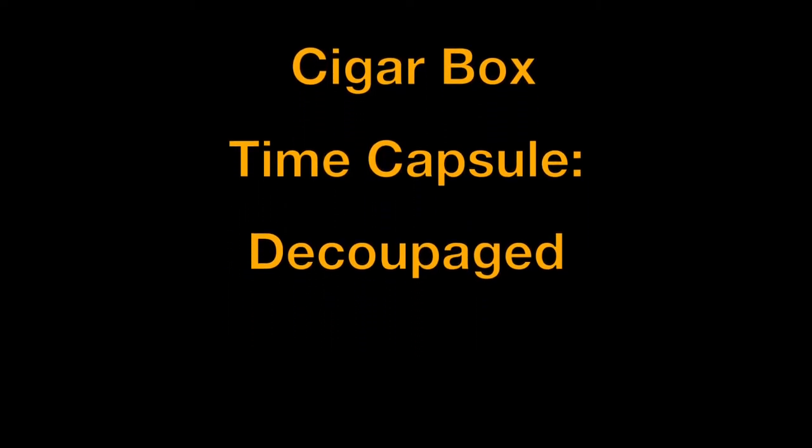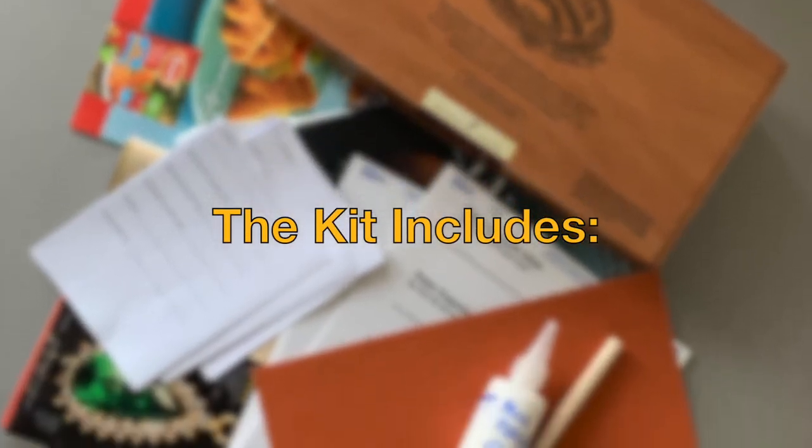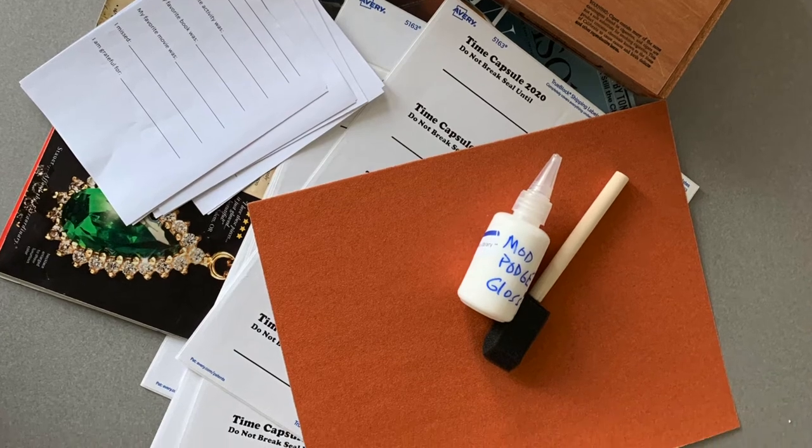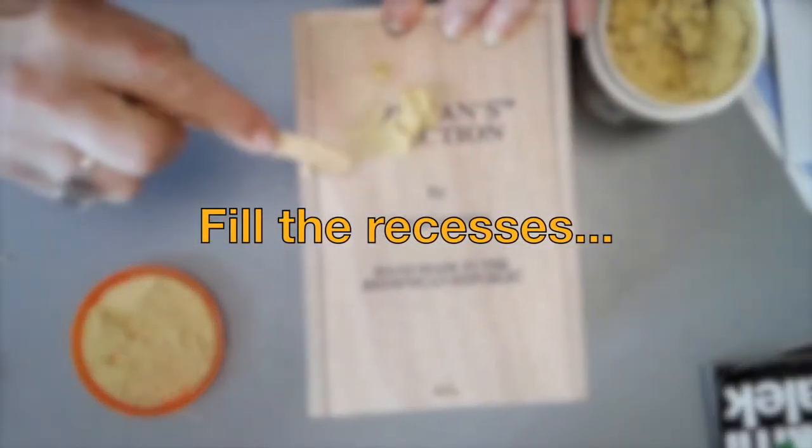Cigar box time capsule decoupage. You can call the library and ask for a kit. We have a limited number of kits and it includes a cigar box, sandpaper, modge podge, a foam brush, magazines, and other things.